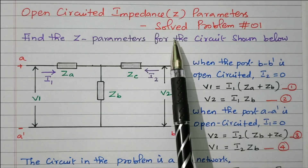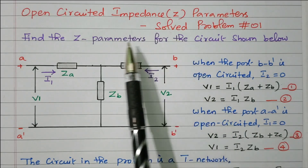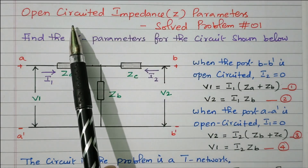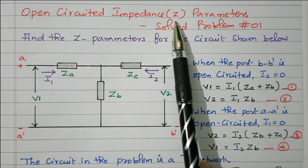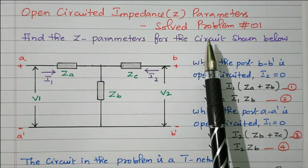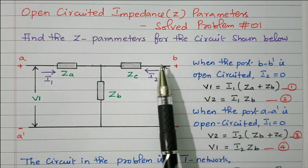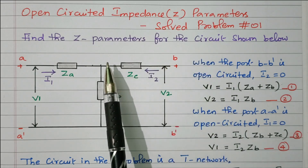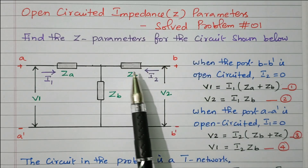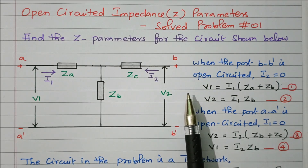Welcome viewers. In this video we will see the solved problem based on the open circuited impedance Z parameter, coming under the two port network. Subscribe the channel for more videos and notifications. Soft copy of this material is available in the drive; the link is given in the description box.